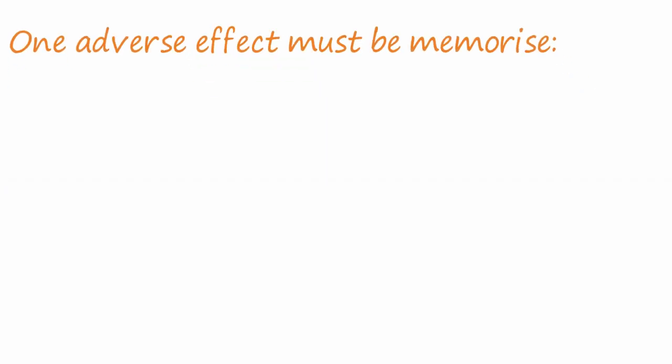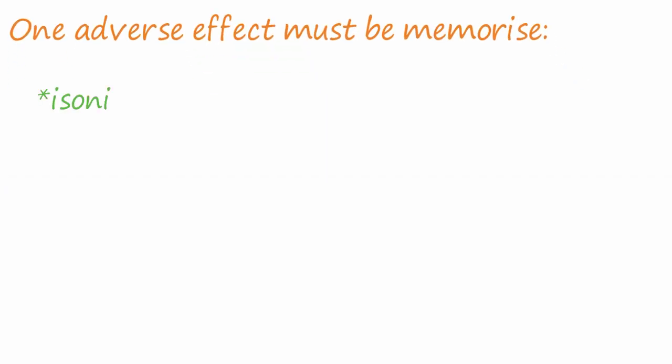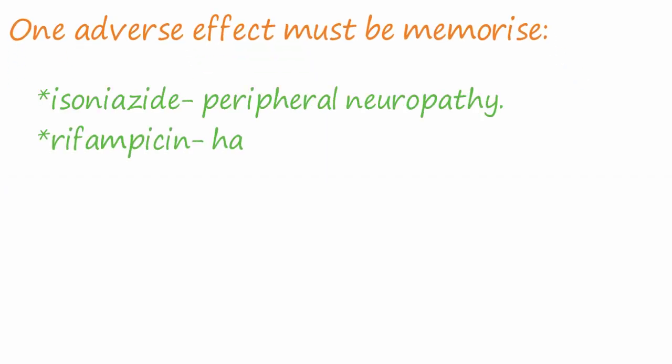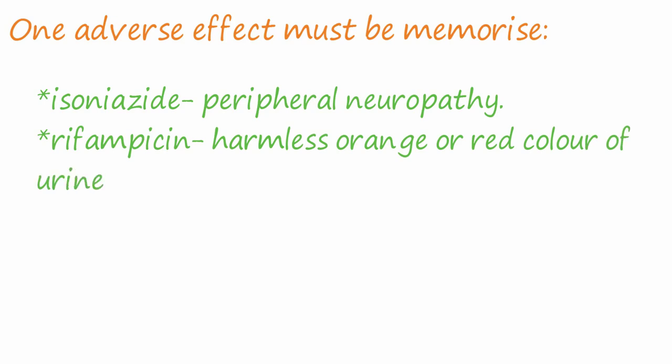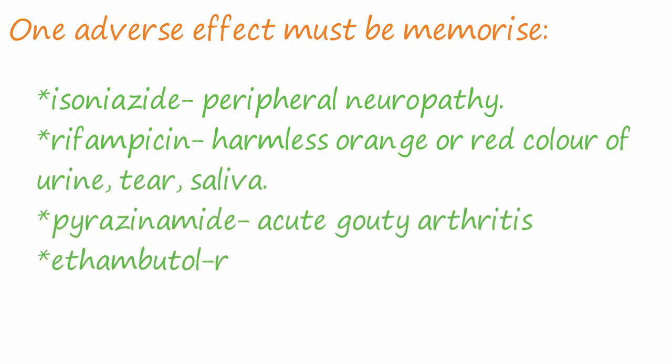One key adverse effect you must memorize for each drug: isoniazid — peripheral neuropathy; rifampicin — harmless orange or red coloration of urine, tears, and saliva; pyrazinamide — acute gouty arthritis; and ethambutol — retrobulbar neuritis.